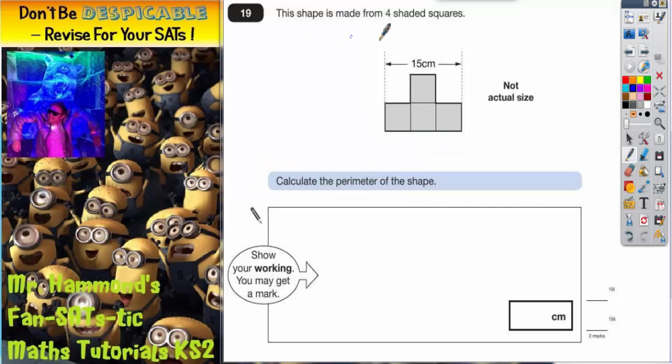Question 19. This shape is made from four shaded squares, and as you can see, the width of the shape is 15. That 15 is going to be crucial later on. It says calculate the perimeter of the shape.